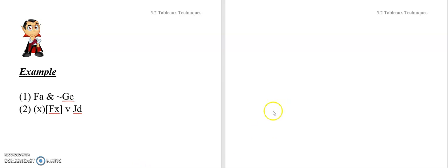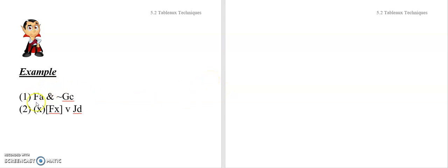Welcome to our second video on section 5.2, 5.2b. We're going to continue looking at some examples. In particular, I want to give you some examples of presenting tableau interpretations of sentences that have individual constants in them, because we didn't see any of those in our previous examples.